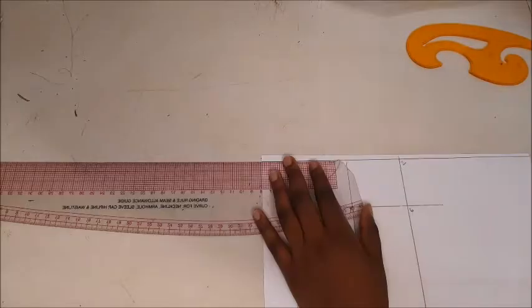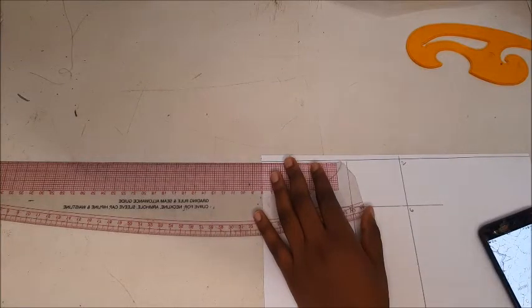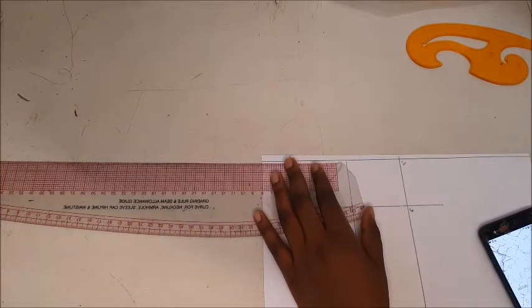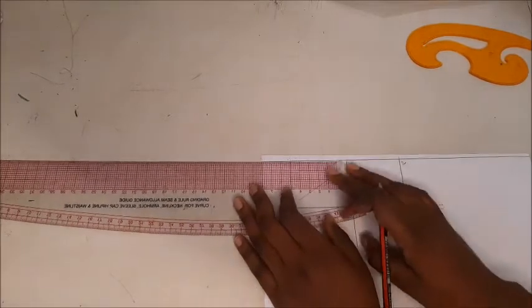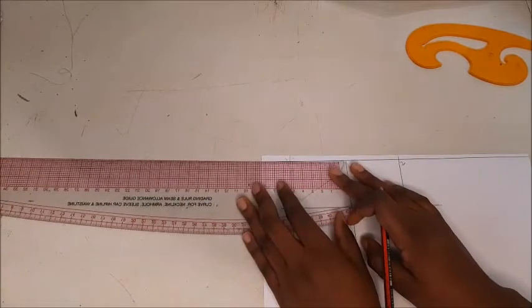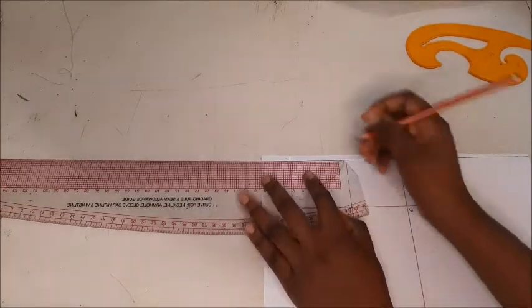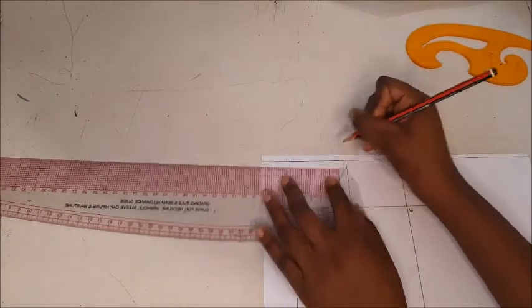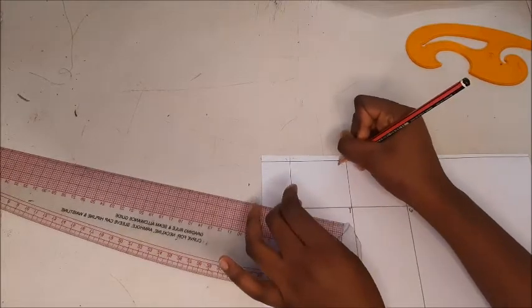Next, you're going to divide your waist measurement by four and add four centimeters. Four centimeters is going to be your dart width. We have two darts, meaning both our darts are going to be two centimeters wide. So you take your waist measurement, which is 68, divide by four, which equals 17 plus four. And that equals 21 and mark point nine from point one.